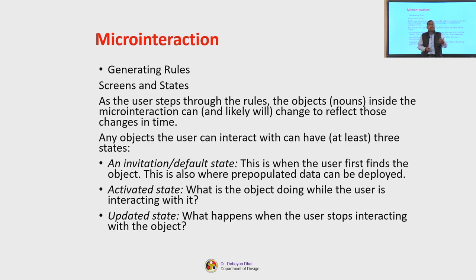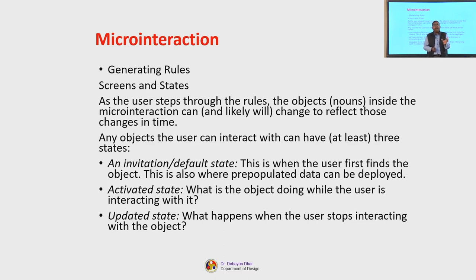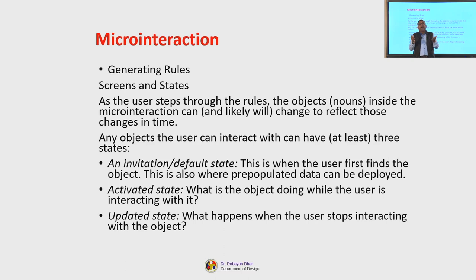And the third one is the updated state. That means what happens when the user stops interacting with the object. Once that activity or function is performed, what happens after that? What is the state being observed by the user so that he or she can comprehend the situation — that okay, I have completed my activity, now probably this is going to happen or now I need to move on to a next stage of action. These are vital pieces of information that the user needs to understand in order to ensure that the micro interaction can be completed and the goal can be reached.